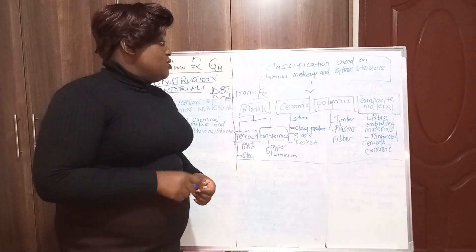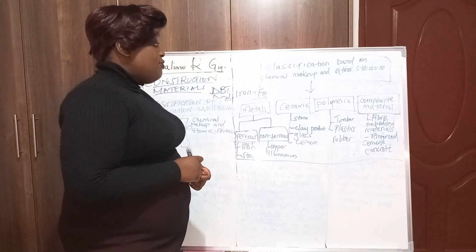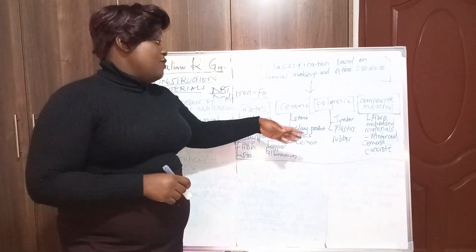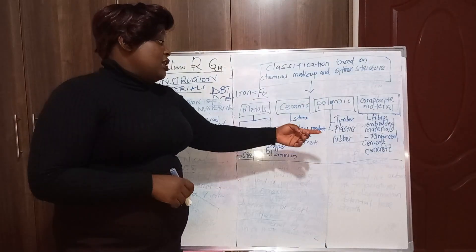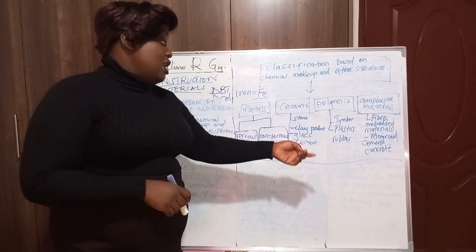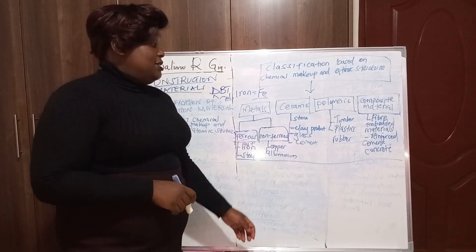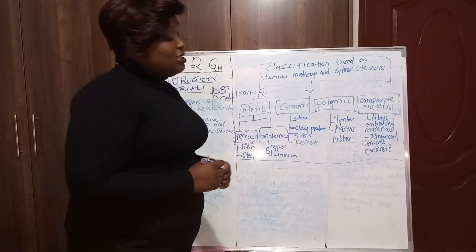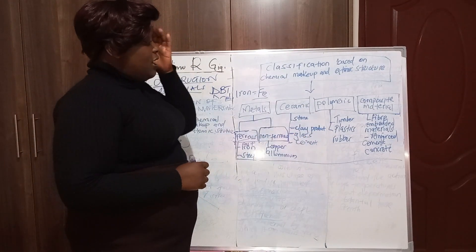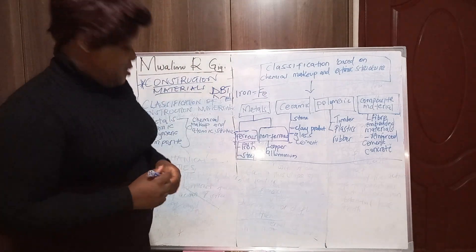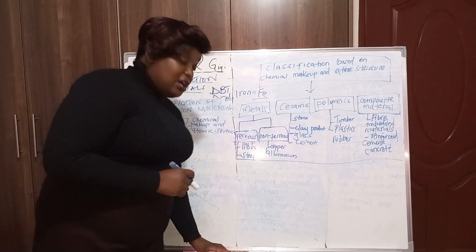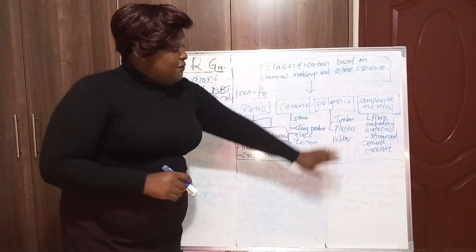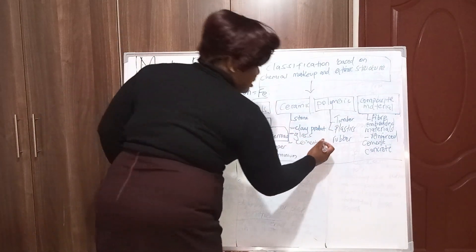Ceramic materials are materials that are brittle — they break easily. Examples include stone, clay products, glass, and cement. Polymeric materials are materials made from organic molecules; examples include timber, plastics, and rubber.